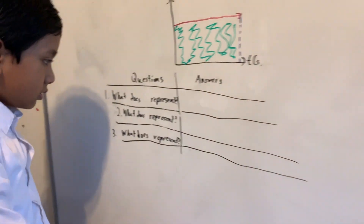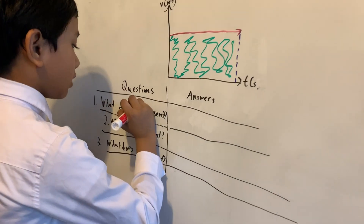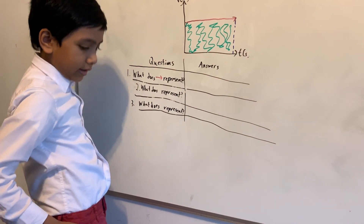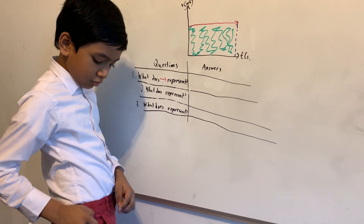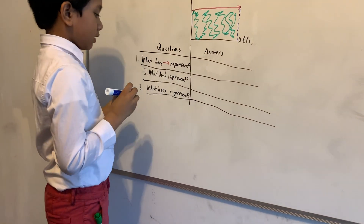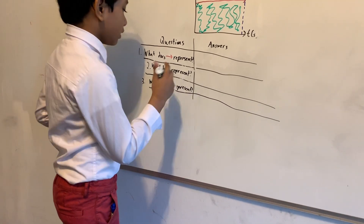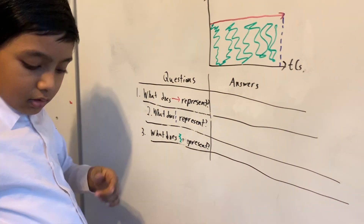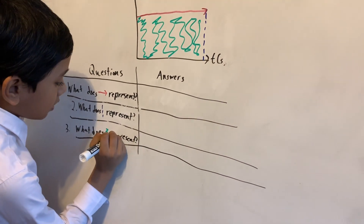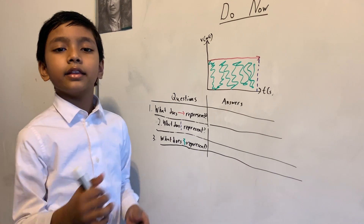Time to fill in the blanks. Number one: what does the red line represent? Number two: what does the blue line represent? And number three: what does the green area represent? I'm going to give you some time to solve all three questions, and I'll continually give the answers to them.